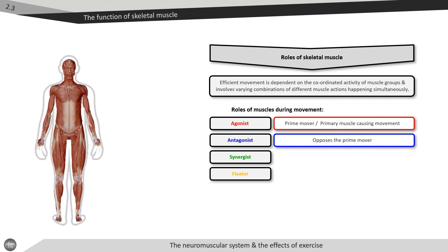This process is known as reciprocal inhibition. The synergistic muscles contract to assist the movement of the prime mover, such as the brachioradialis and the brachialis during elbow flexion.